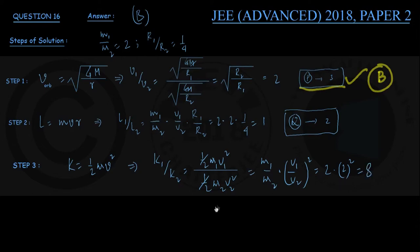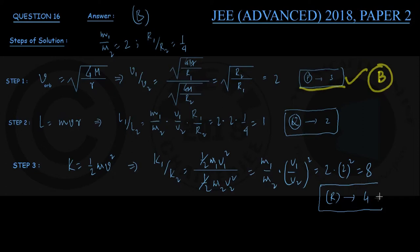Consulting the table, element R in list 1 matches with element 4 in list 2. Let me also show you an alternative method of getting the same answer.